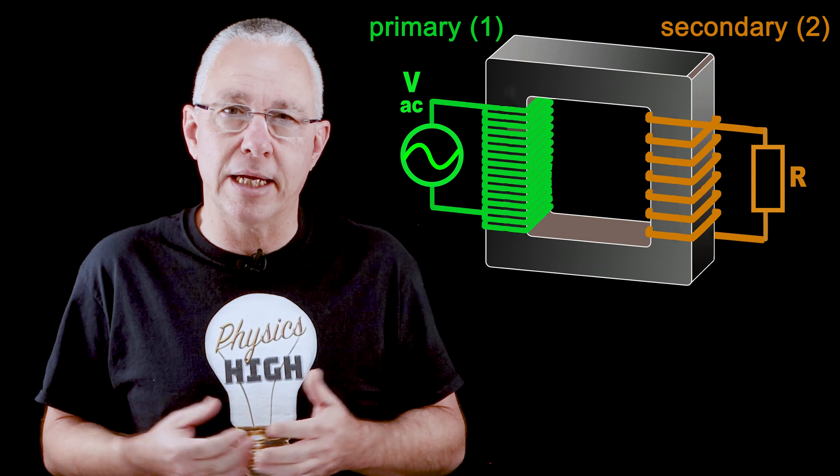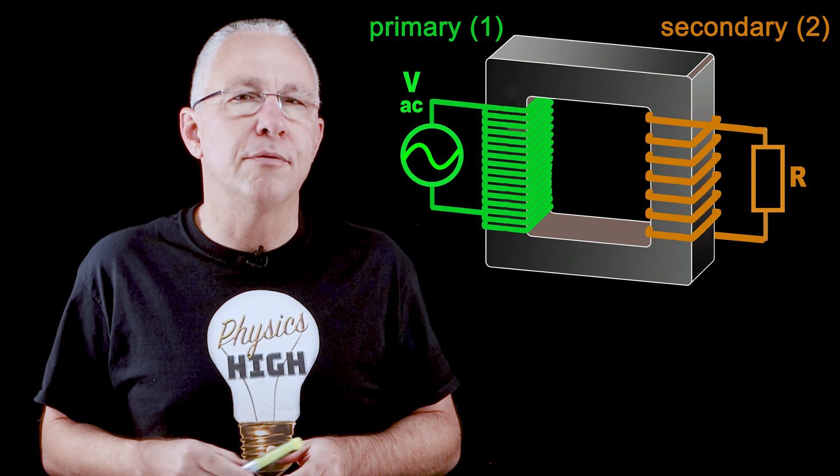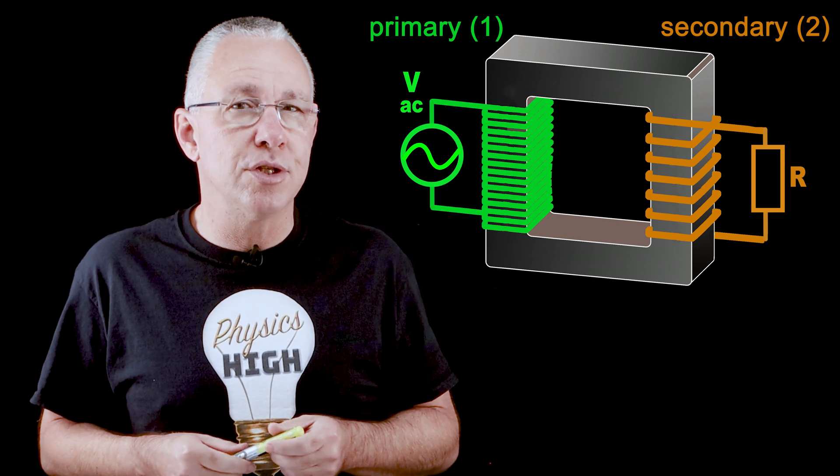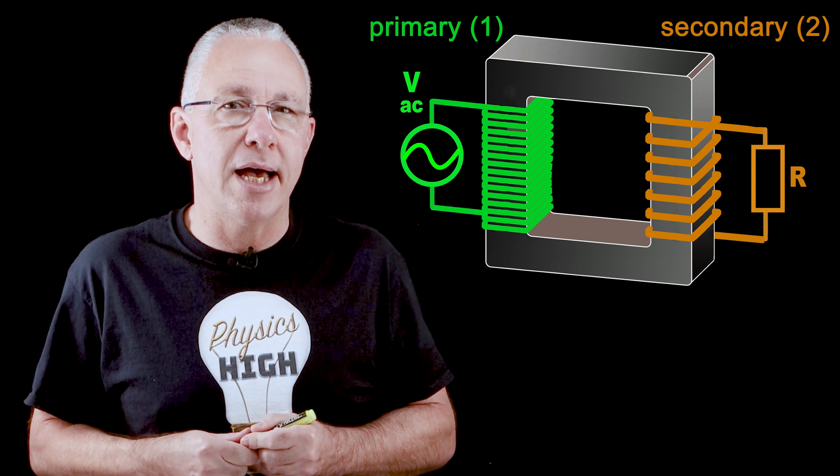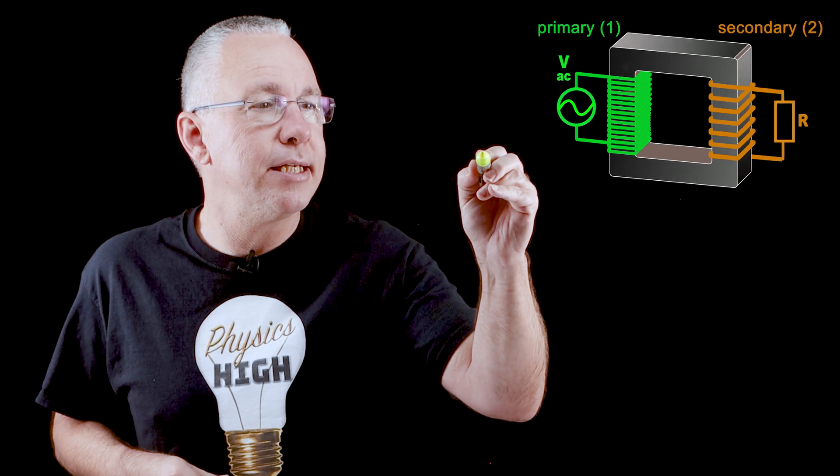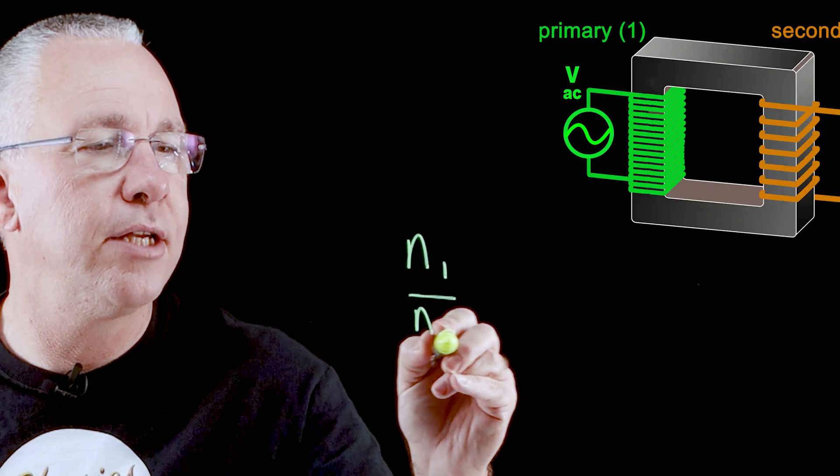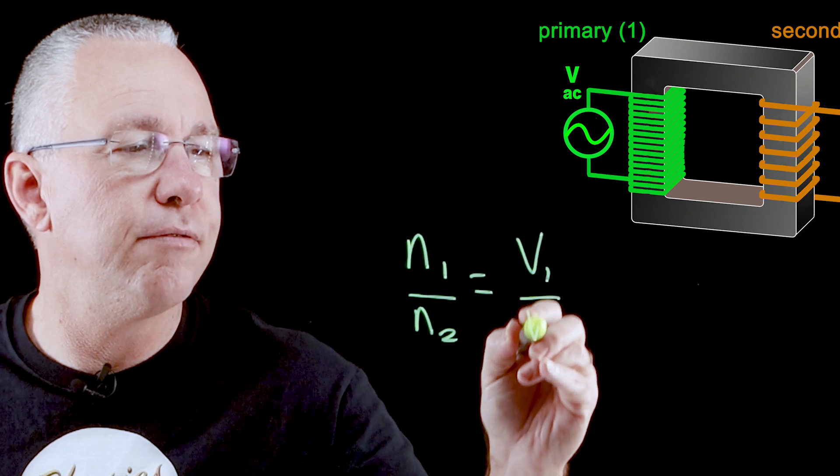Now mathematically, it's simple to work out how much the voltage changes by. The ratio between the number of turns from the primary to the secondary is the same as the ratio as the voltage. So what we get is N1 over N2 equals V1 over V2.